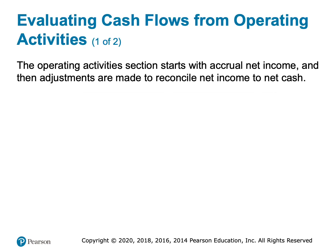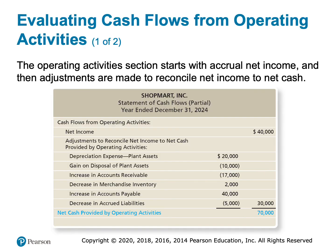When I add all those numbers up, net cash from operating activities is $70,000. Remember, my profit was only $40,000, but what I'm saying is that while I showed profit of $40,000, I actually made $70,000 in real hard money just from doing my normal day-to-day operations. So if I used cash basis accounting, my profit would have been $70,000, not $40,000.